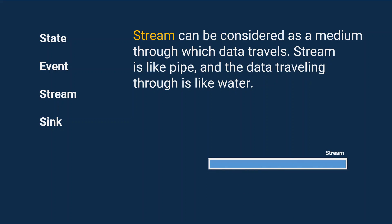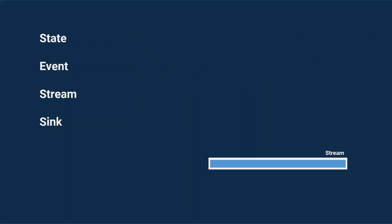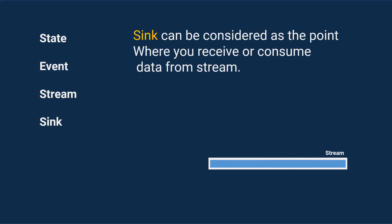So there's a pipe and data is traveling through it — this whole thing is what we call a stream. Obviously, there's a point where you actually consume or receive the data flowing through the stream, and that point is called a sink. Sink can be considered as the point where you receive or consume data from a stream. Now you have knowledge of these four terms and can understand the BLoC pattern easily.